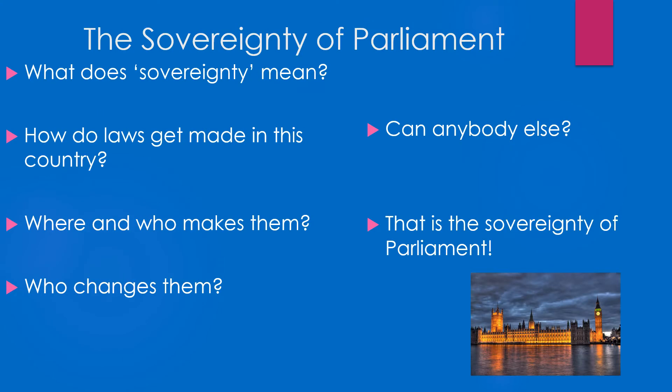Next is the sovereignty of Parliament. If something is sovereign, it means that it's really special and sort of sacred. Laws in this country should only be made in Parliament — that's what sovereignty of Parliament means. Basically, the only place that laws can be made or changed is in Parliament. It's not always the case, but that is the principle of sovereignty of Parliament.